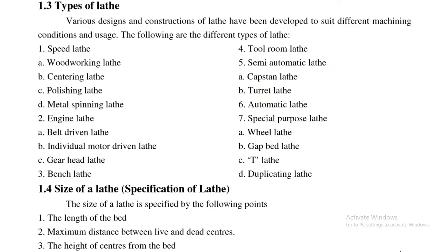Types of lathe — various designs and constructions of lathe have been developed to suit different machining conditions. The following are the different types: first, speed lathe, which is further classified as woodworking lathe, centering lathe, polishing lathe, and metal spinning lathe. Second, engine lathe, which is further classified as belt driven lathe, individual motor driven lathe, gear head lathe, and bench lathe.